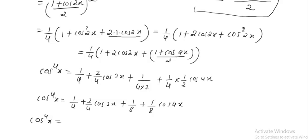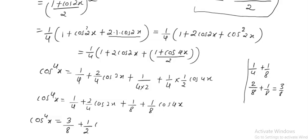So 1 by 4 plus 1 by 8 equals 3 by 8. Therefore cos to the power 4x equals 3 by 8 plus (1 by 2) cos 2x plus (1 by 8) cos 4x.